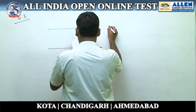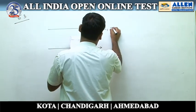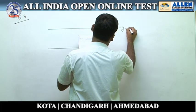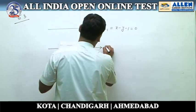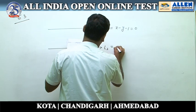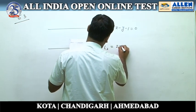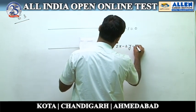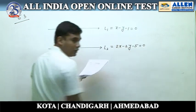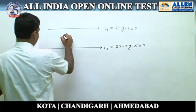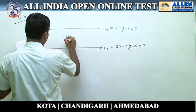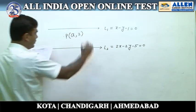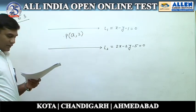First is L1: x minus y minus 1 equals 0. L2: 2x minus 2y minus 5 equals 0. And point P, (A, 2), lies between these two parallel lines.